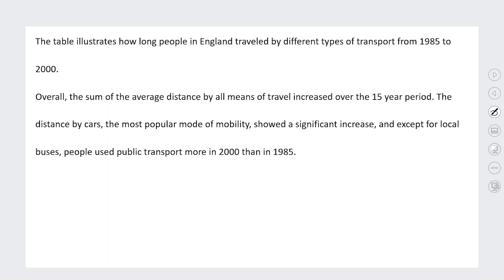Let's see what this candidate has done. The first paraphrase reads: 'The table illustrates how long people in England travel by different types of transport from 1985 to 2000.' There's just one issue here — 'how long people in England traveled.' We use 'long' to talk about time, like 'how long did it take you to travel here?' or 'how long is it to drive between London and Manchester?' — that's about time. What this person needs to say is 'how far,' which refers to distance, like 'how far did you travel?' or 'I traveled a couple of miles.'